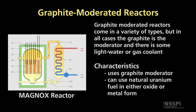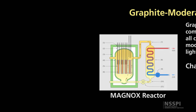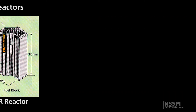The Magnox reactor uses a gas coolant. In some cases it can use a gas coolant in a Brayton cycle, or in other cases it might use a light water coolant in a Rankine cycle, or even a gas coolant in a Rankine cycle.